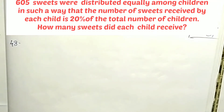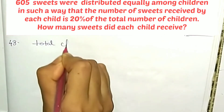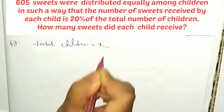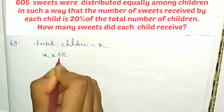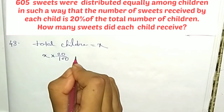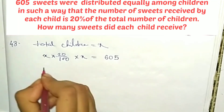Total sweets: 605. Distributed to children such that the number of sweets each child receives is 20% of the total number of children. Let x be the number of children, so each child receives 20% of x, which equals x times 20/100.